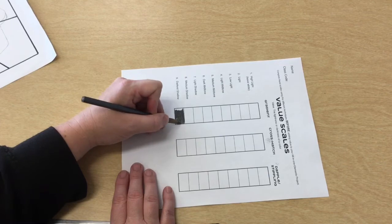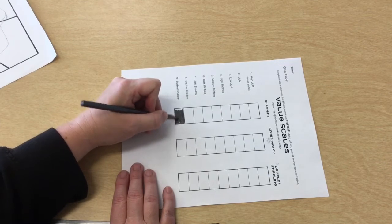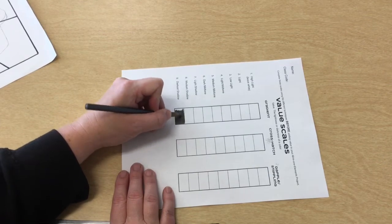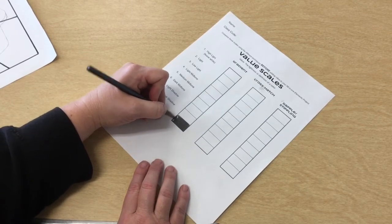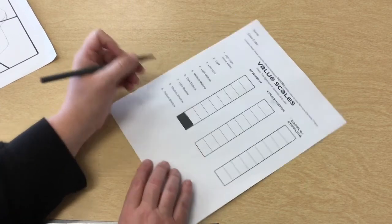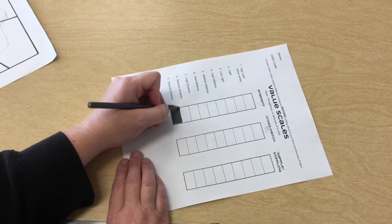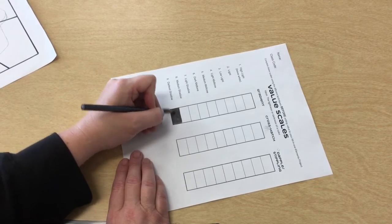There's often a misunderstanding with value where it's not just coloring it all the same color. When we do the value scale we are doing it all the same color in the boxes, but when we do it on our paper we want to have a smooth transition.